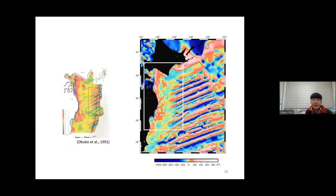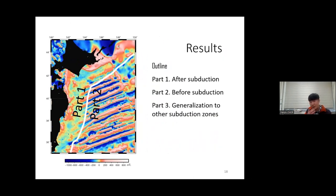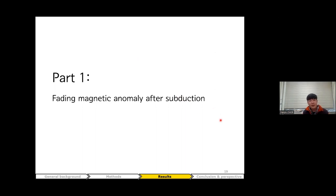I built and improved a marine magnetic anomaly map using both scalar and vector magnetic data. The white box is the area where a previous study by Oku et al. (1991) compiled data, and I enlarged the coverage. I studied, first, the region after subduction, and second, the region before subduction. Further, I applied this generalized method to five available subduction zones.